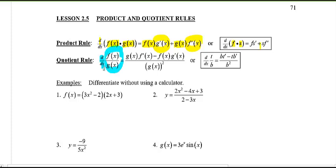Then we've got the quotient rule, where you take the derivative of a quotient — a numerator f(x) over a denominator g(x). It's g(x)·f′(x) minus f(x)·g′(x), all over g(x) squared. Using top (t) and bottom (b): bottom times t′ minus top times b′, all over b squared.